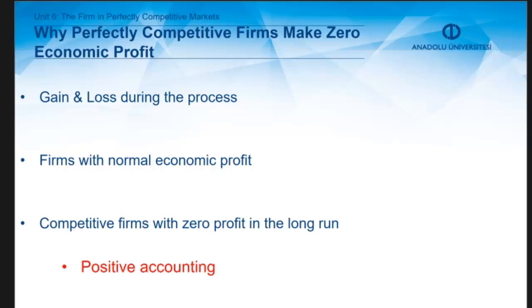In the long run, because of free entry and exit, all firms in a particular industry make normal economic profit, and in long-run equilibrium no producer has an incentive to enter or exit. Competitive firms make zero economic profit in the long run because accounting profit is always greater than economic profit. Making zero economic profit means firms still make positive accounting profit, and since they cannot do better elsewhere, they stay in the market.